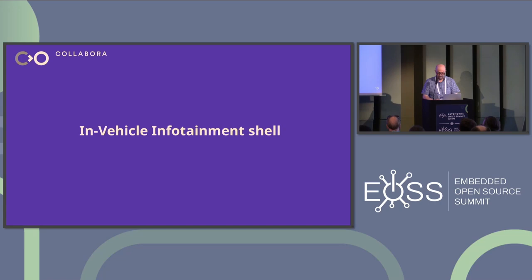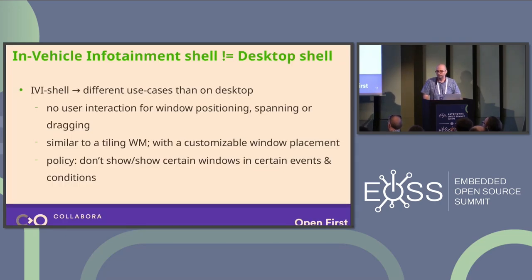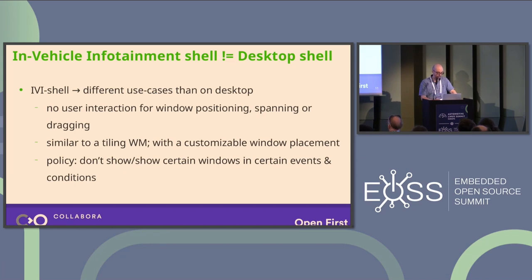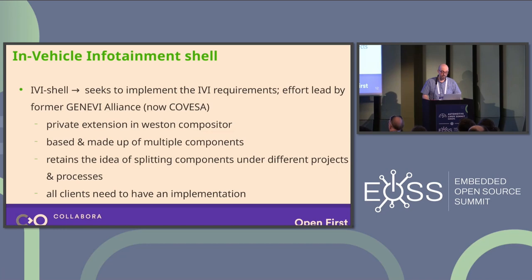Moving to the IVI shell — in the automotive industry we have different requirements than on the desktop. We don't have user interaction for window positioning, spanning, and dragging. UI-wise, you can think of something like a tiling window manager with customizable window placement. Furthermore, we have something like a policy: you would want to hide or show different windows under different events and conditions — like when you put the car in reverse, you want to show the rear camera. The IVI shell specification was an effort led by the former GENIVI Alliance, now called COVESA.